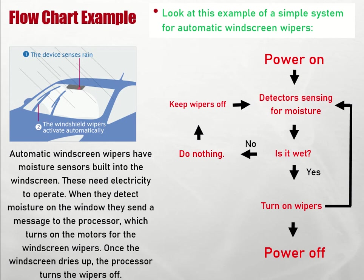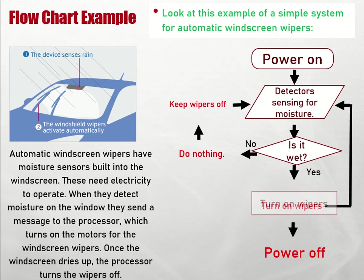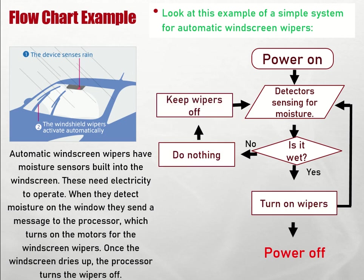Now that isn't a flowchart or system diagram yet, because you haven't got the correct shape boxes. At the beginning, you need rounded corner boxes — that's for the power on. When you've got the detector sensing for moisture, that's an input or output, so it's a parallelogram shape. 'Is it wet?' is a question or decision, so you'd have a diamond shaped box. All the others — doing nothing, keeping the wipers off, turning them on — are processes, so they're in regular rectangles. And finally, you've got another terminator at the end.